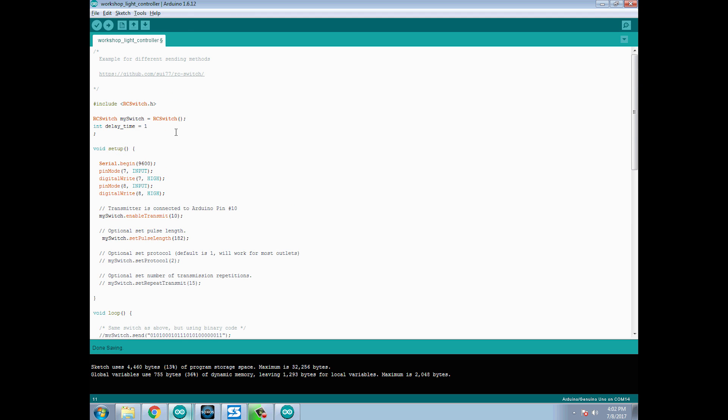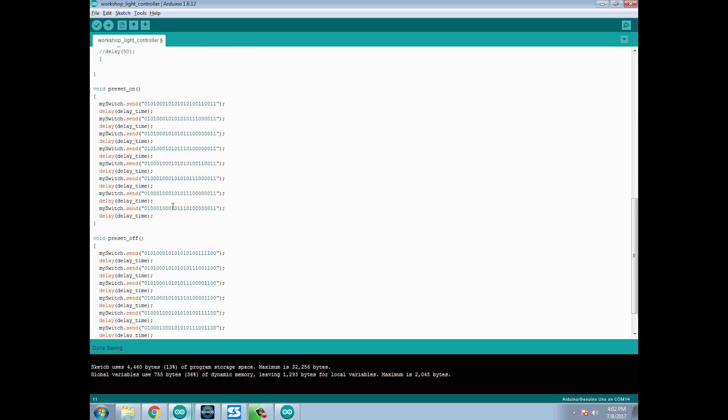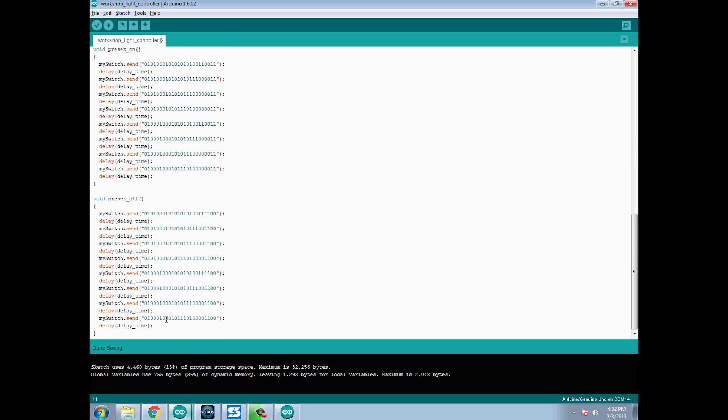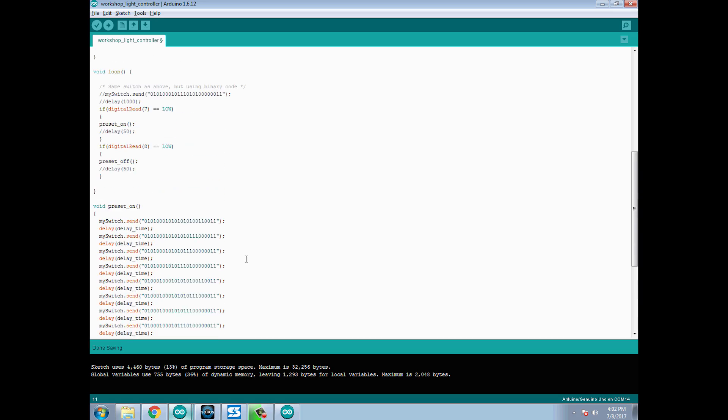I'm using a one millisecond delay time, and then I have the off which basically does the off command for everything. So it's pretty simple. I'm going to change this up a little bit to do presets and some other things but this is really the basics of the code right here.